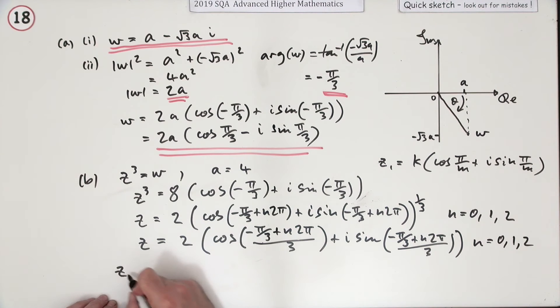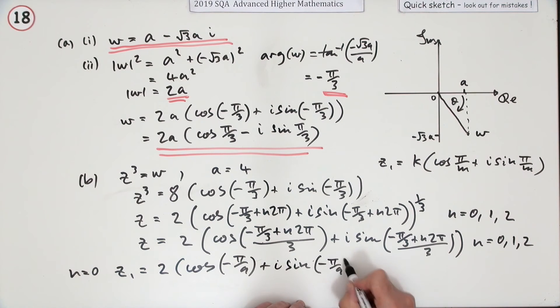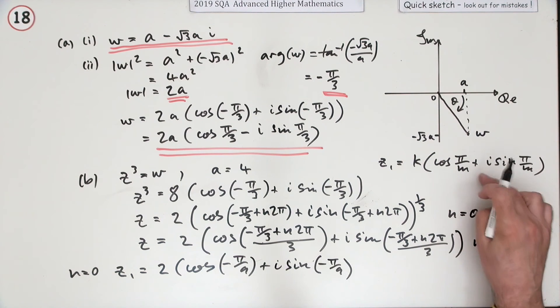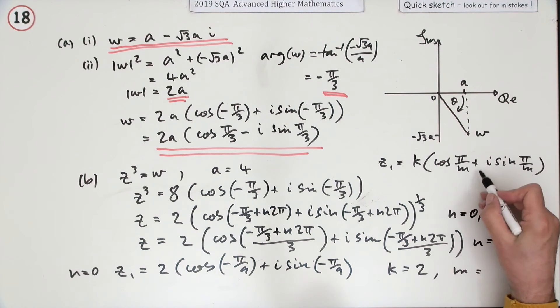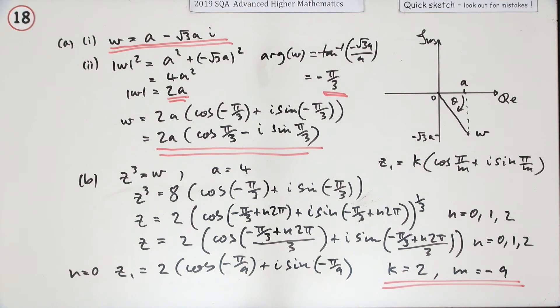So for this first one, z1 will be when n equals 0. So you'll have 2 cos - if n is 0, that's just negative pi upon 9 plus i sine negative pi upon 9. That's just using the zero, so that's the first one here. So that means now I can say what k and m are. k is 2. Strange way to write m, so that m isn't just a 9, because that's not got a negative in it and they haven't changed this, so it must be the original pi upon 9. So m must be negative 9.